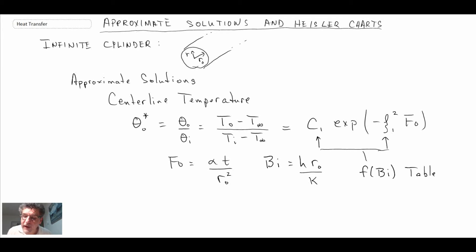Okay, so that is how you can evaluate the centerline temperature. Let's take a look at spatial temperature variability. And you'll notice that this is quite similar to what we saw for the slab, but there are slight differences in the equation, so just be careful with that.